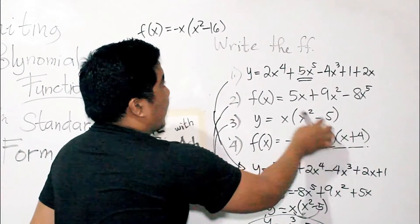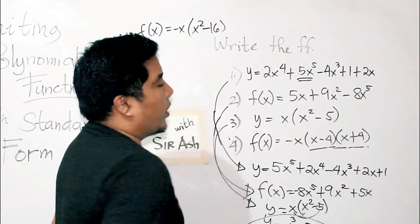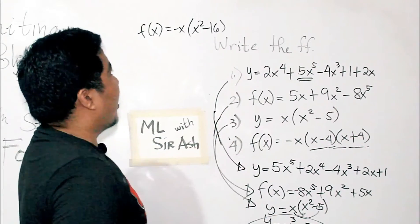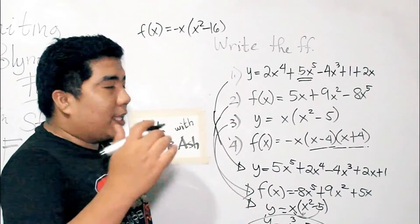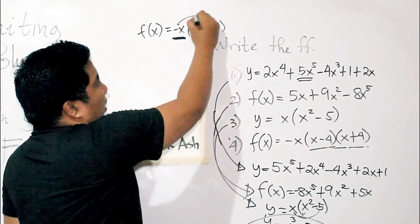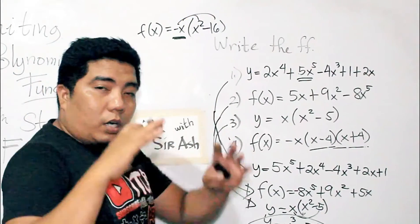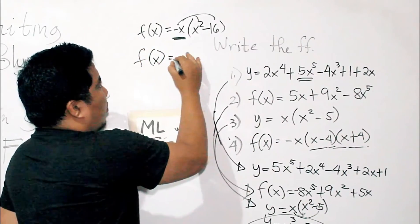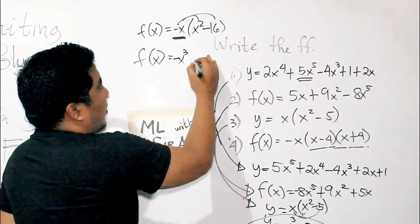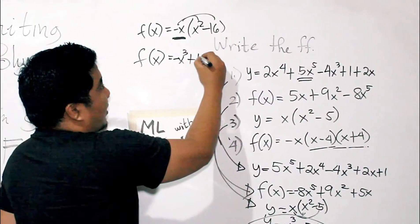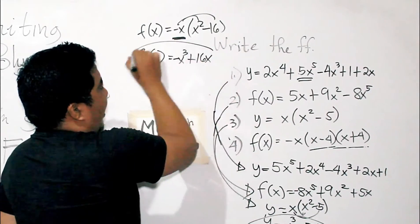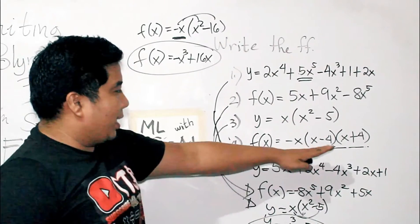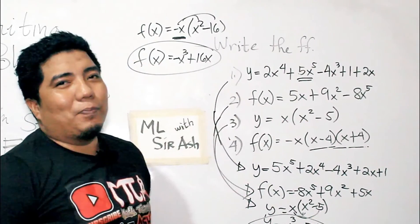The resulting expression for x minus 4 times x plus 4 is x squared minus 16. Because x times x is x squared, 4 times 4 is 16. Negative, positive, that will give you negative. Are we finished? Not yet. Because we need to distribute our negative x here to our parenthesis. And, that will give us f of x is equal to negative x cubed plus 16x. And, that will be your final answer for writing this expression to the standard form.